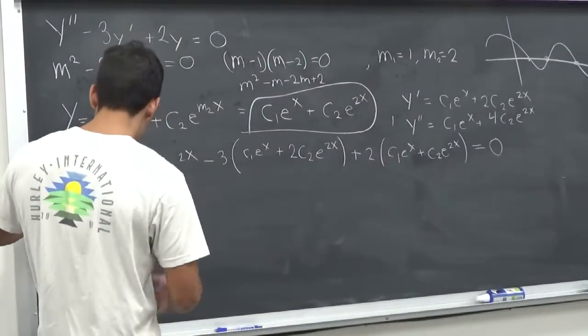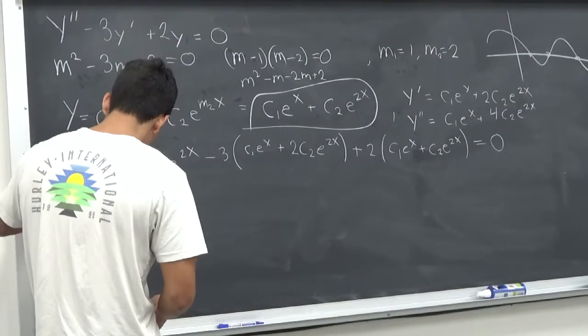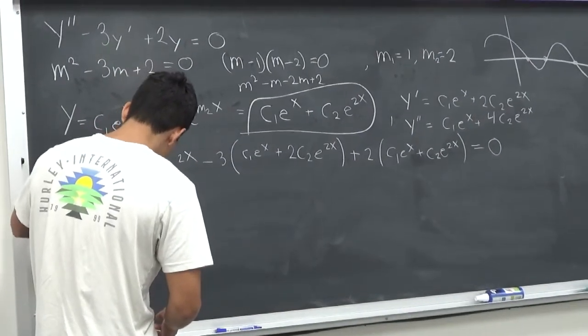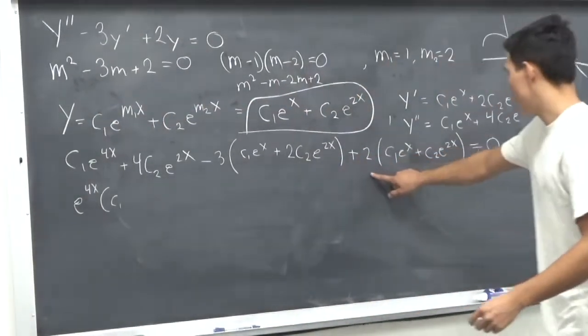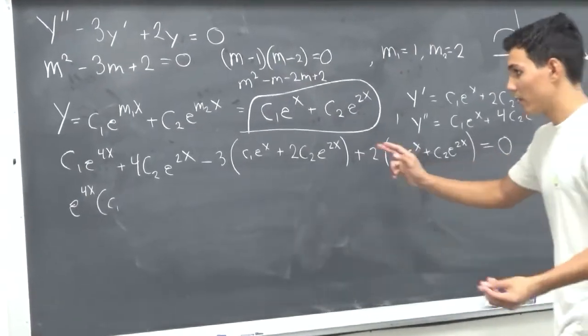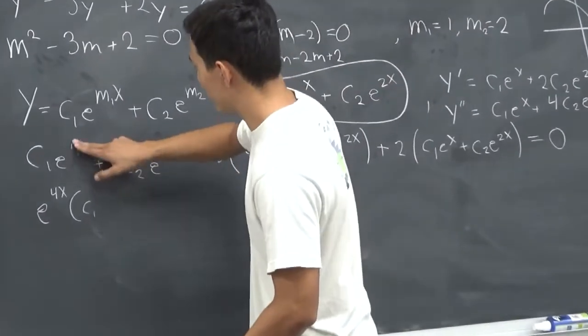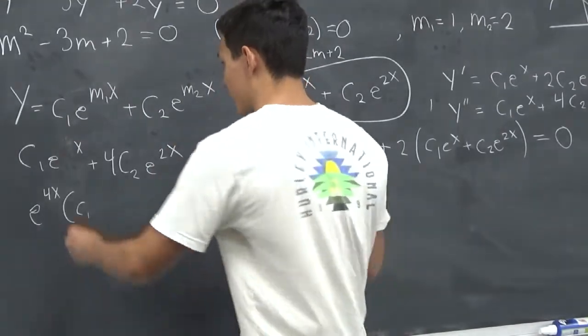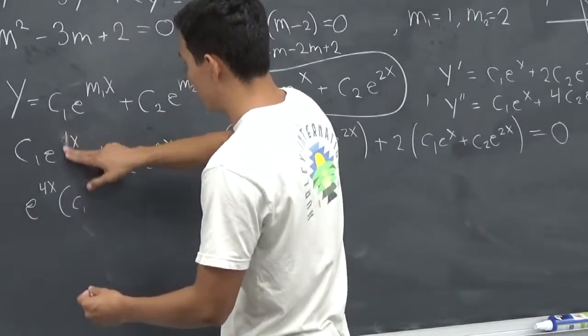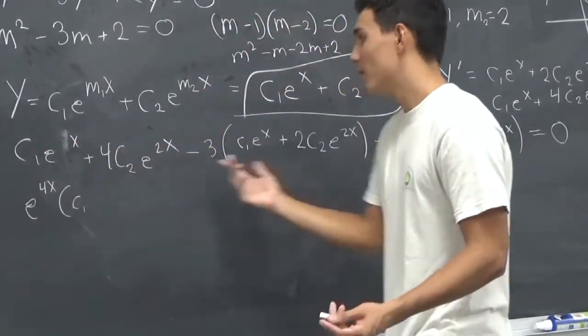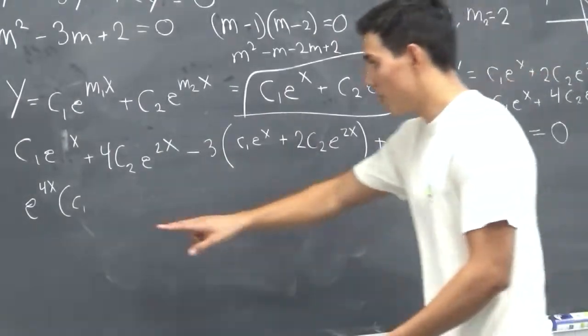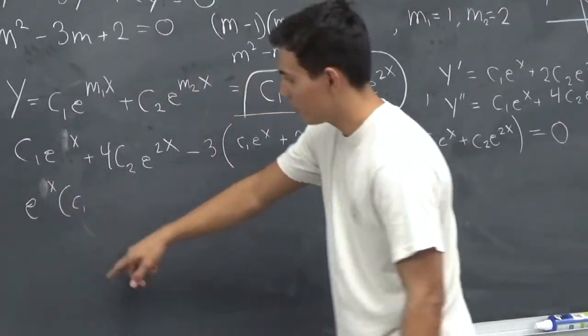So let's count all the e to the x's here. We have C1, and then we have, one second, why the hell is this 4? This should be just x. My bad. This should just be 1x. Yeah. Okay, so let's count all the, terrible mistake here.